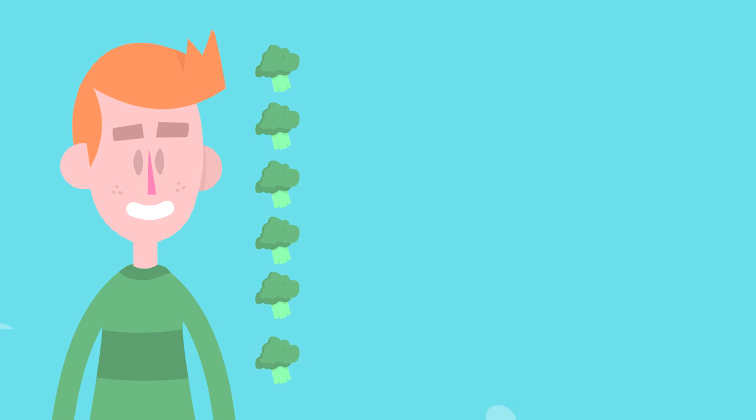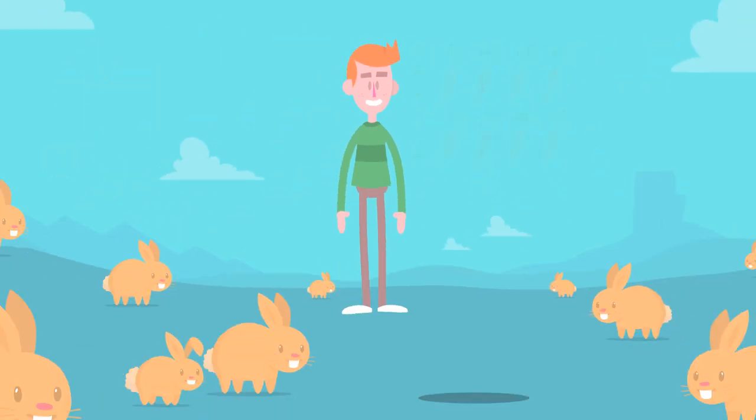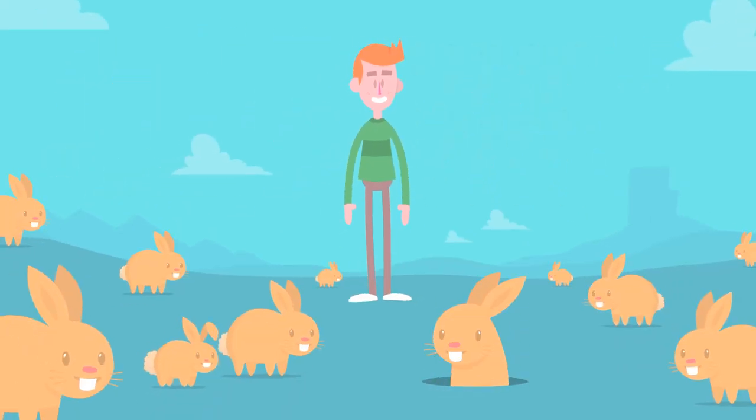He has six pieces of broccoli, eight carrots, and a whole lot of rabbits. He wants to feed each rabbit an equal amount of each vegetable. What's the maximum number of rabbits he can feed?